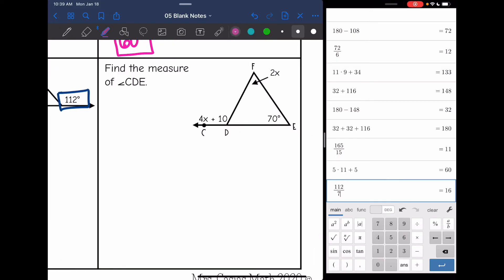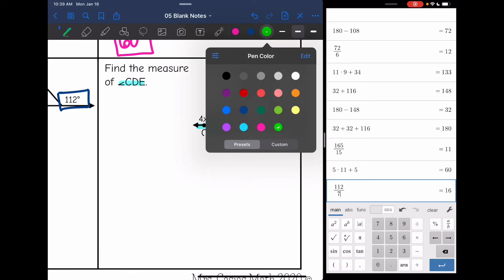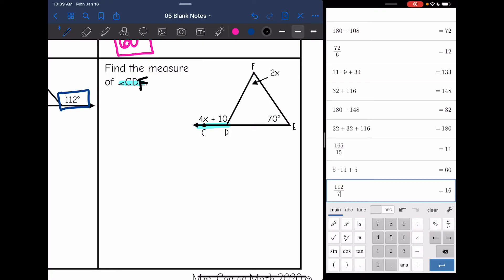All right, last one, they want us to find the measure of angle CDE. Sorry, that should say CDF. They want us to find the measure of angle CDF. So I'm going to do that by finding x and then substituting back into 4x plus 10. So first, let's set up an equation to find the value of x. So my two interior angles will equal my exterior angle. So 2x plus 70, my two interior angles equal the exterior angle of 4x plus 10. The left side is simplified, the right side is simplified.